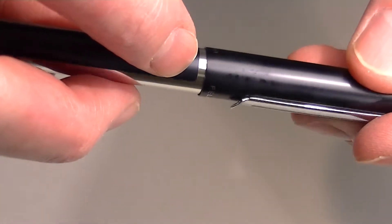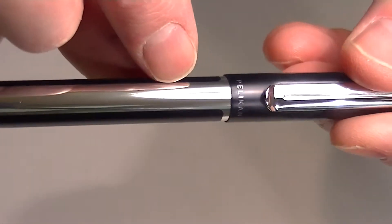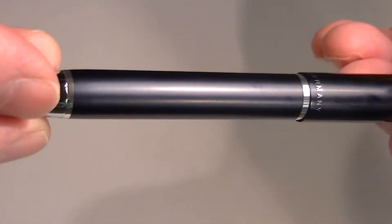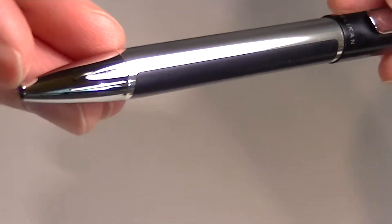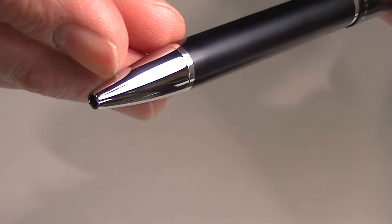And then we have a chrome band that runs around the pen. That transitions to a vertical bar that runs down the pen into another chrome ring at the bottom. And then of course there is a chrome tip on the pen.